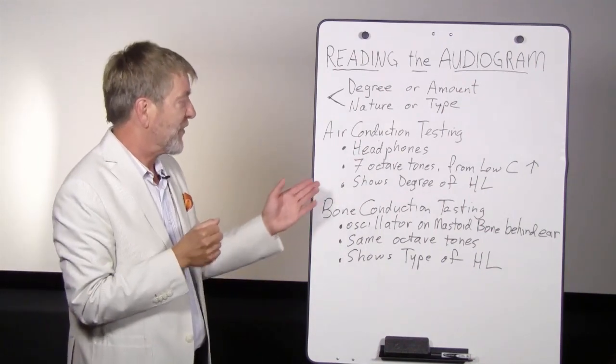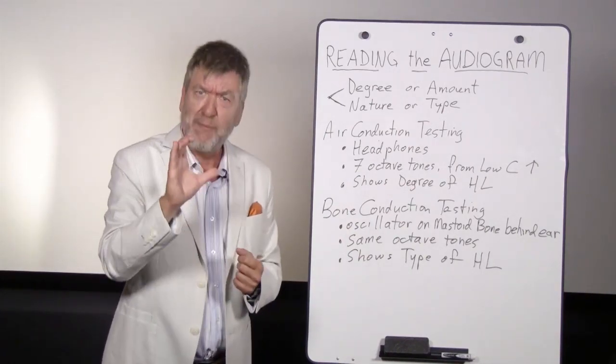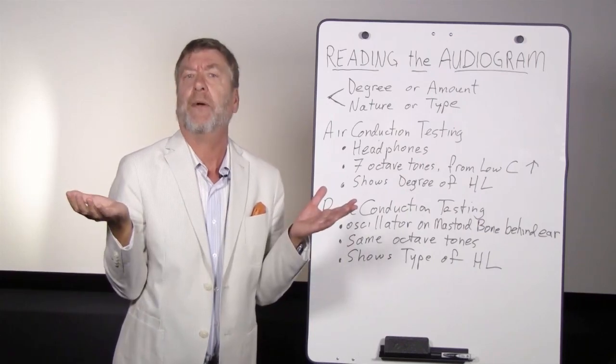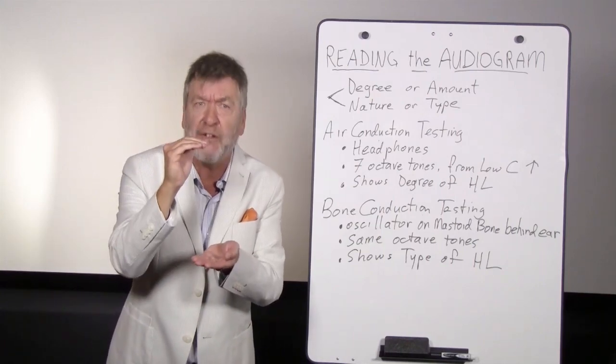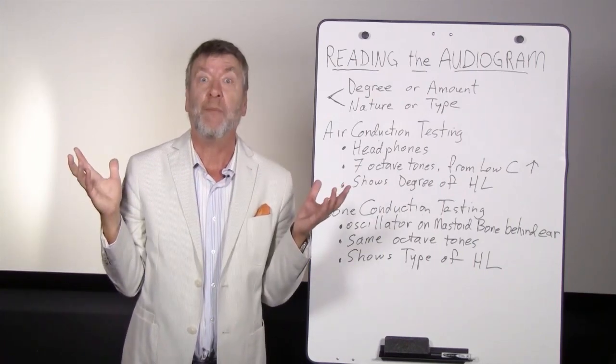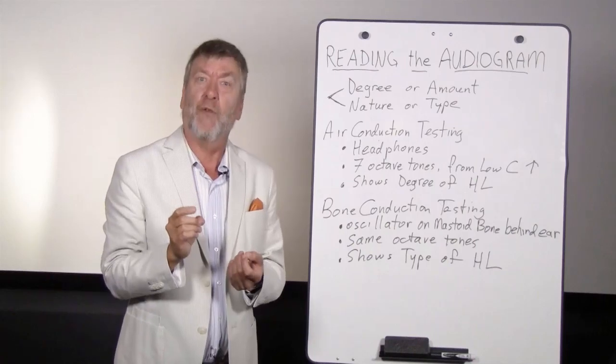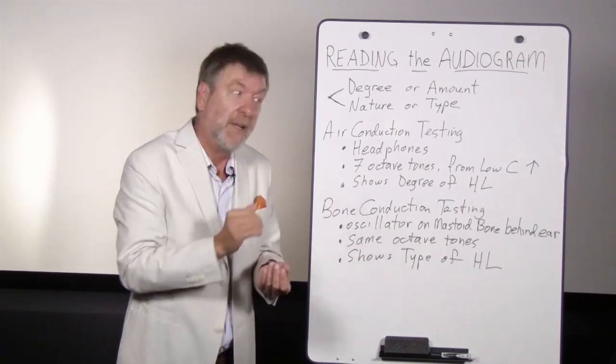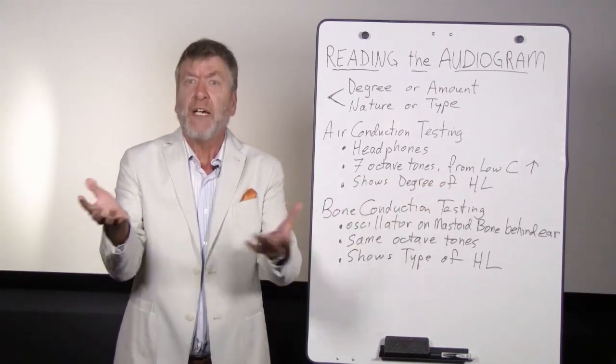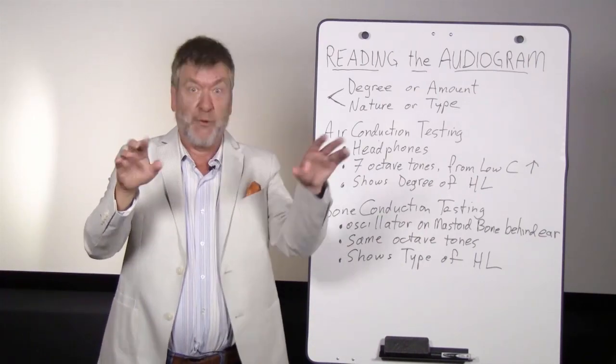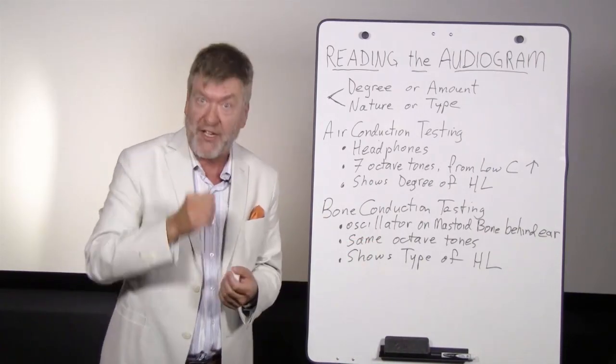Air conduction testing is done to show the degree of one's hearing loss. The tones are presented at a decibel level loud enough for the client to easily hear, and he or she raises a hand or pushes a button. Then the clinician starts making the tone softer and softer until the patient can no longer hear them. The softest level that the patient can just barely hear any one of those tones is called the patient's threshold for that tone. Air conduction testing shows the degree of hearing loss, and that degree can change or fluctuate madly between frequencies. You can have good hearing in the bass frequencies and poor hearing for the treble.